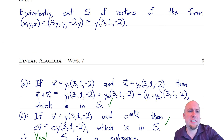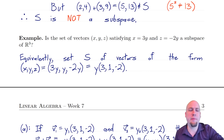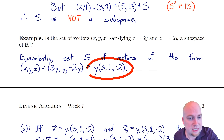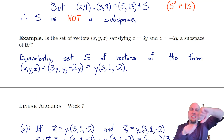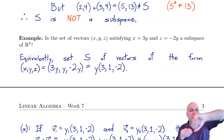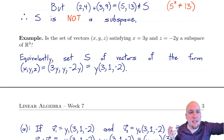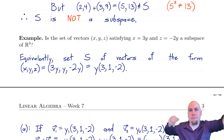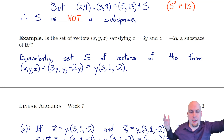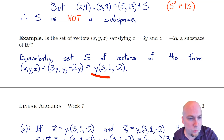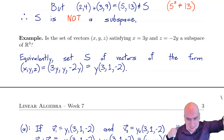This matches the geometric intuition: the set of all vectors of the form y·(3, 1, −2) is all scalar multiples of one particular vector, which is just a line pointing in a particular direction. So here's a one-dimensional subspace — it's a line through the origin.